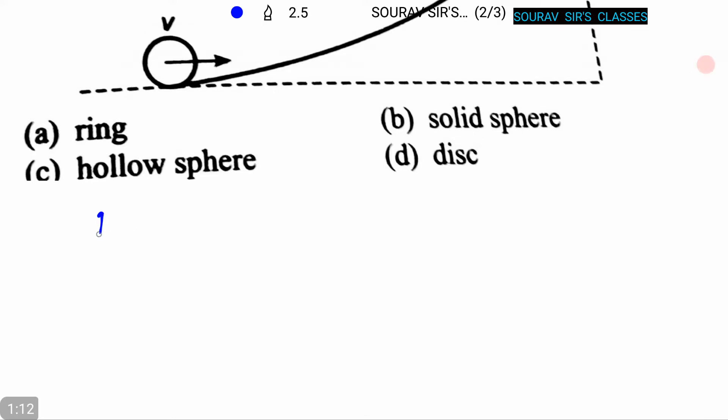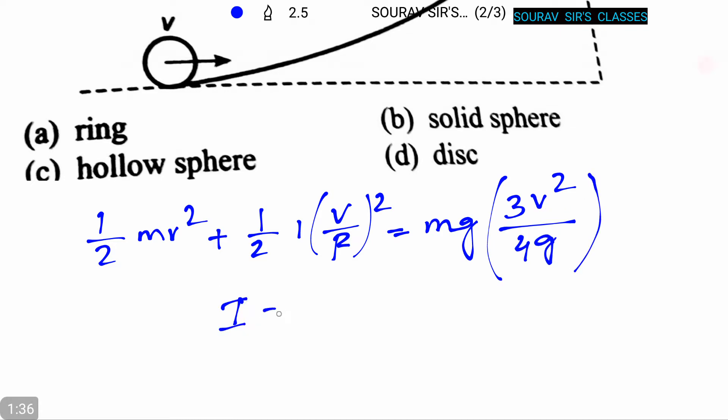We can write that (1/2)mv² + (1/2)I(v/r)² equals mg(3v²/4g). This value was given in the question. So we can write that I equals...